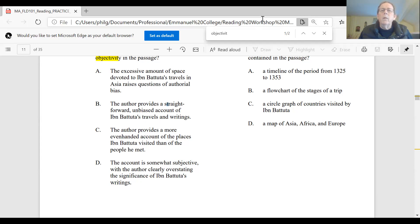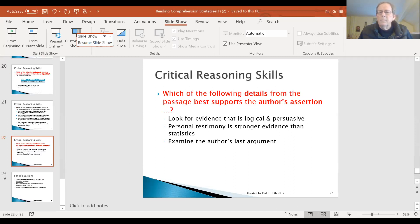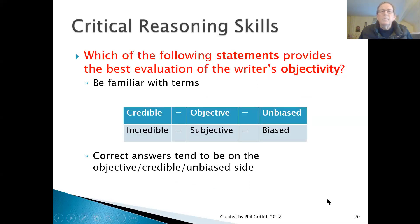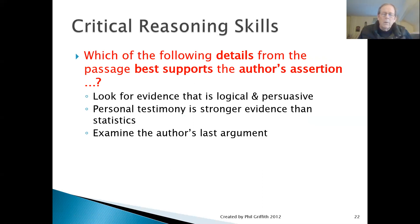The final type of question in this category is: which of the following details from the passage best supports the author's assertion — and they'll put a quote from something the writer actually said, very often from the first paragraph where the thesis occurs. They're asking you to evaluate the arguments presented in favor of the author's thesis and decide which is the strongest.